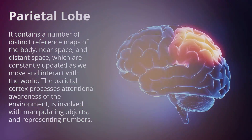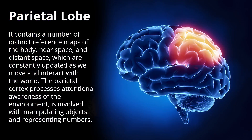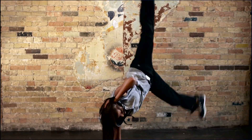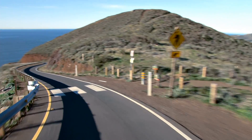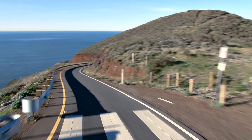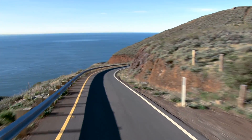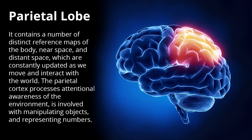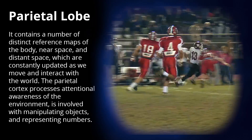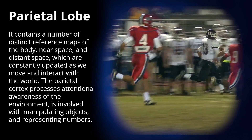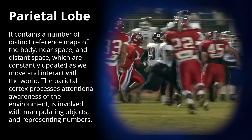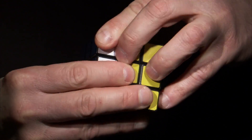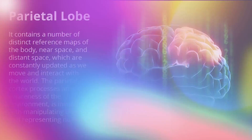It contains a number of distinct reference maps of the body, near space and distant space, which are constantly updated as we move and interact with the world. The parietal cortex processes attentional awareness of the environment, and is involved with manipulating objects and representing numbers.